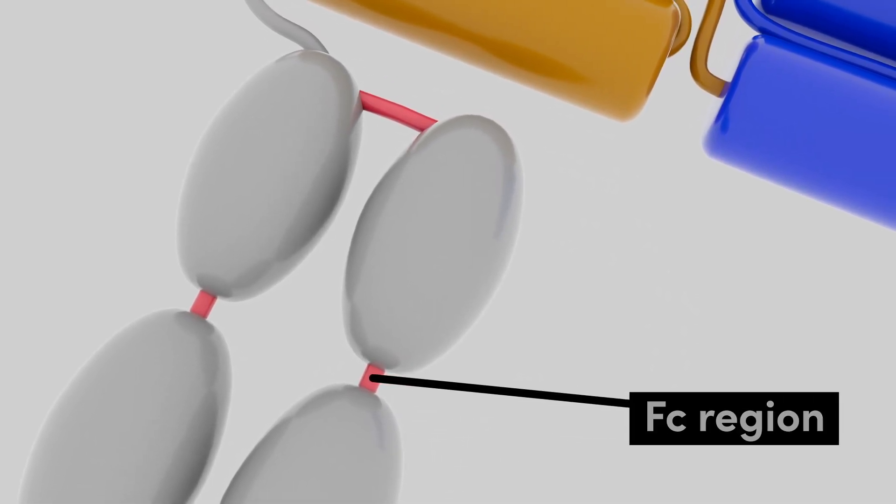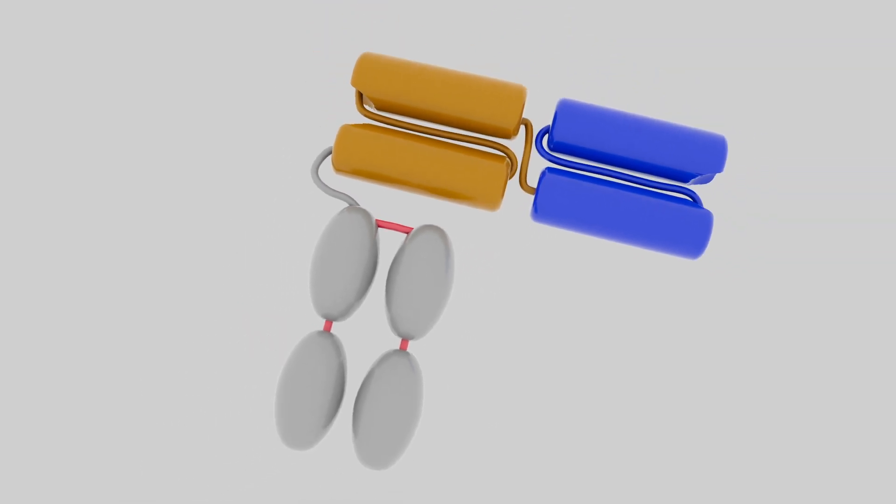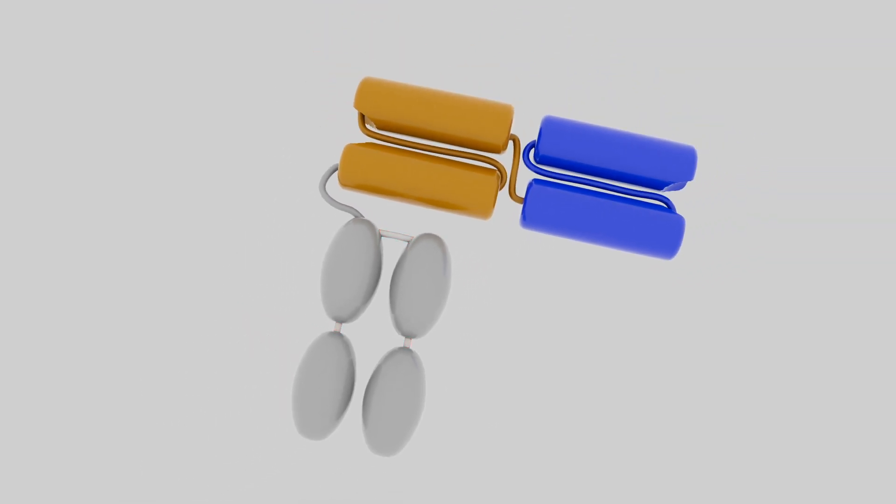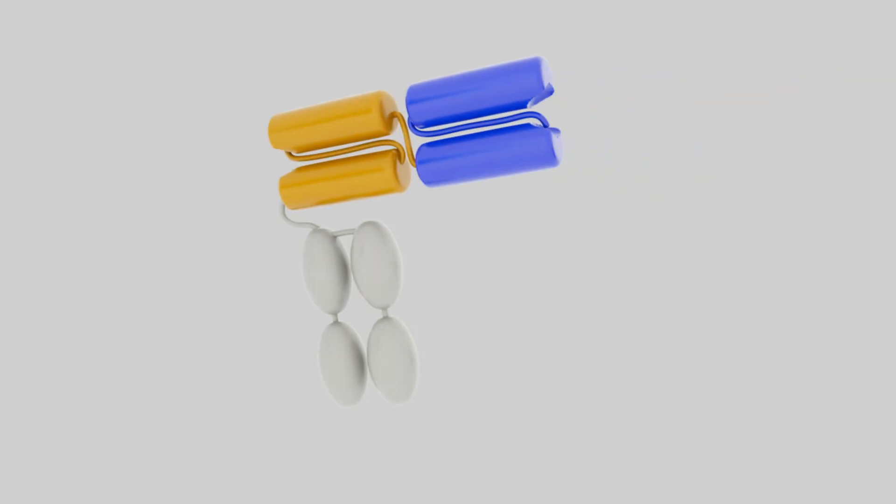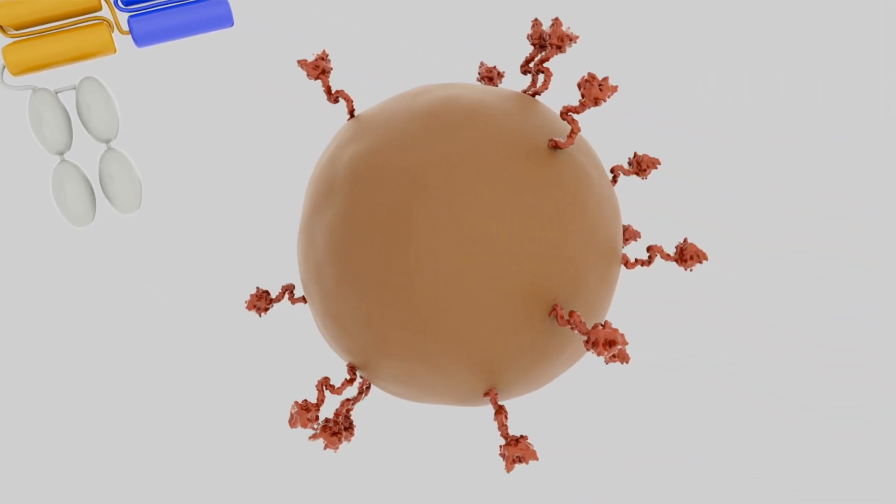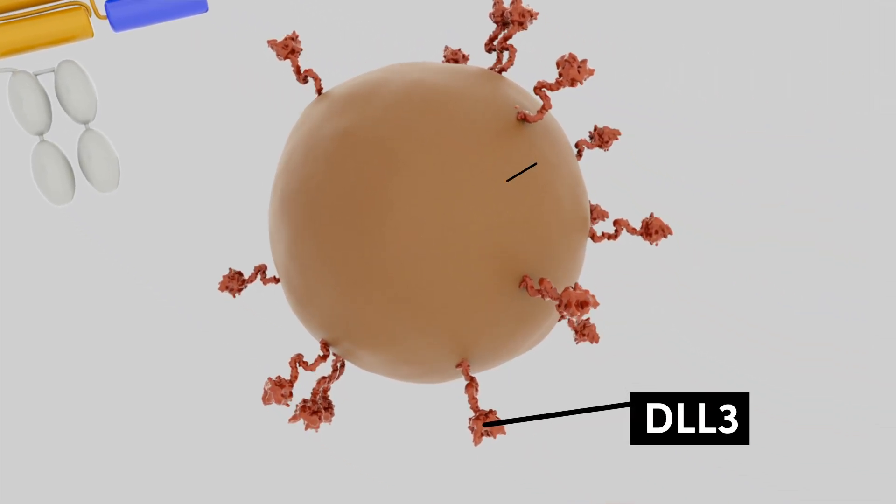Tarlatimab includes a stable, effector-functionless FC domain that increases its serum half-life. As a first-in-class byte in small cell lung cancer, tarlatimab targets delta-like ligand-3, or DLL3.